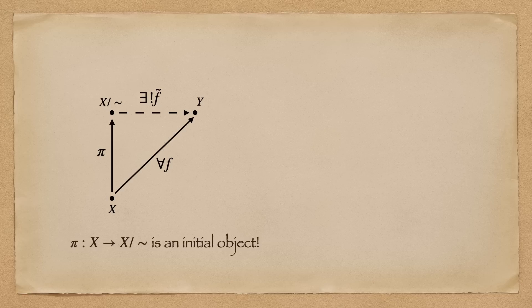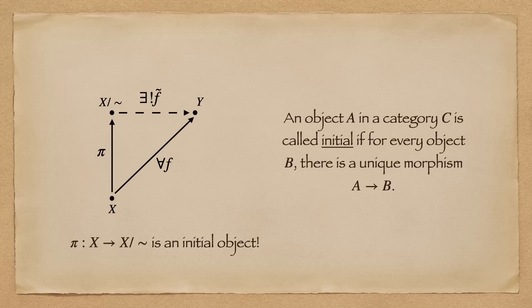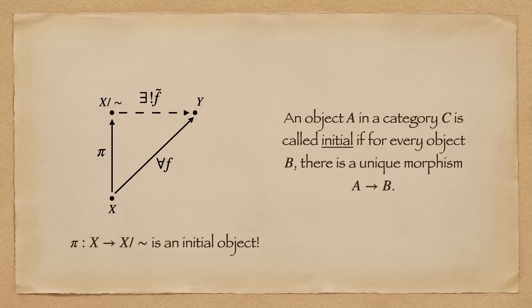And in fact, if we recall the definition of an initial object, it says that our object pi is initial, and for every object f in our category, there exists a unique morphism from pi to f, which is precisely what our commutative diagram is saying. And since pi is an initial object, it is a universal object.